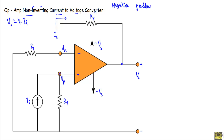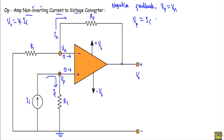Due to negative feedback, VP will equal VN. As the circuit is in negative feedback, the current through the inverting terminal and non-inverting terminal will equal 0. Therefore, the input current II will flow through the parallel resistance RI to ground. So VP will equal II times RI. Due to negative feedback, VP equals VN, so VP equal to VN equal to II·RI.